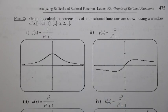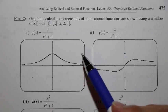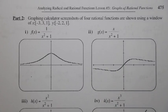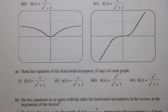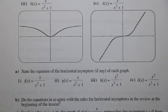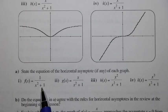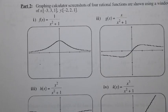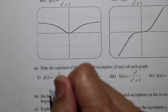Looking at four calculator screenshots of different rational functions, we state the horizontal asymptote for each. For f(x) = 1/(x² + 1), there is no vertical asymptote. The graph approaches the x-axis on both sides, giving a horizontal asymptote of y = 0.